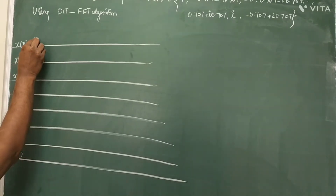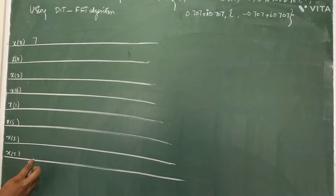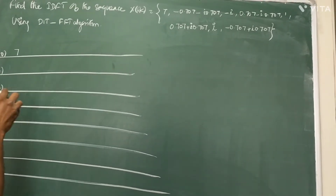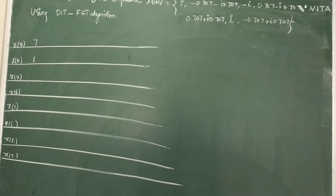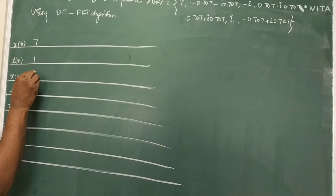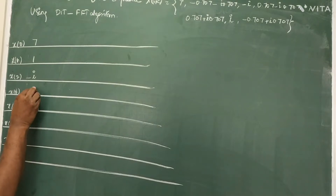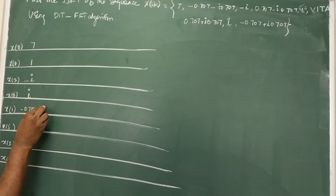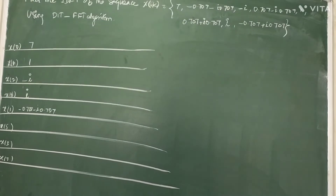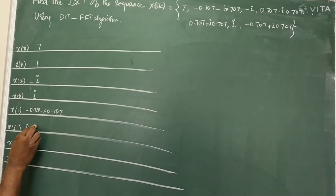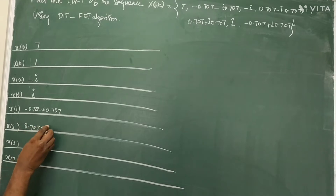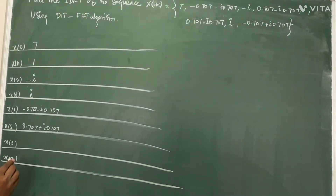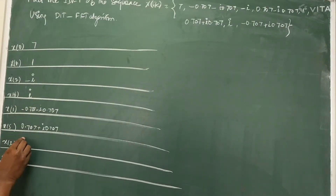For X(0), the value is 7. X(4) is 1. X(2) is minus i. X(6) is i. X(1) is 0. X(5) is 1.414 minus i times 1.414 (approximately). X(3) and X(7) are also assigned their respective values from the given sequence.